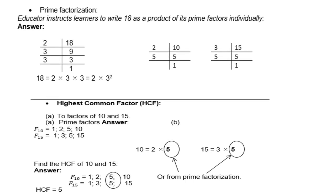Prime factorization: the indicator instructs learners to write 18 as a product of its prime factors. Remember what a prime number is — it only has 2 factors: 1 and itself, like 2, 3, 5, 7, 11, 13, 17. A factor is a number that can divide into another number without a remainder. So for the prime factors of 18, start with the smallest prime that can divide into 18, which is 2. So 2 divides into 18 nine times. Then 2 can no longer divide into 9, so the next prime number is 3. So 3 into 9 is 3, and then 3 goes into 3 once. Once you reach 1, you are done.